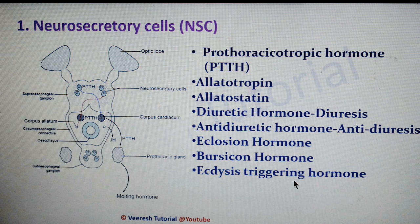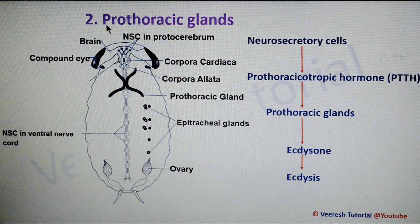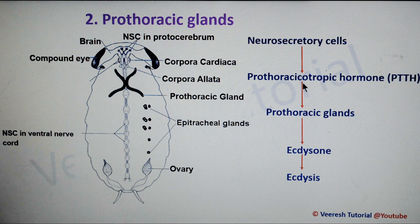Ecdysis triggering hormone helps in eclosion. The second endocrine gland is the prothoracic glands — paired glands present on the ventrolateral part of the thorax. Neurosecretory cells stimulate via prothoracicotropic hormone to activate the prothoracic glands. These prothoracic glands release ecdysone, resulting in ecdysis, that is molting.